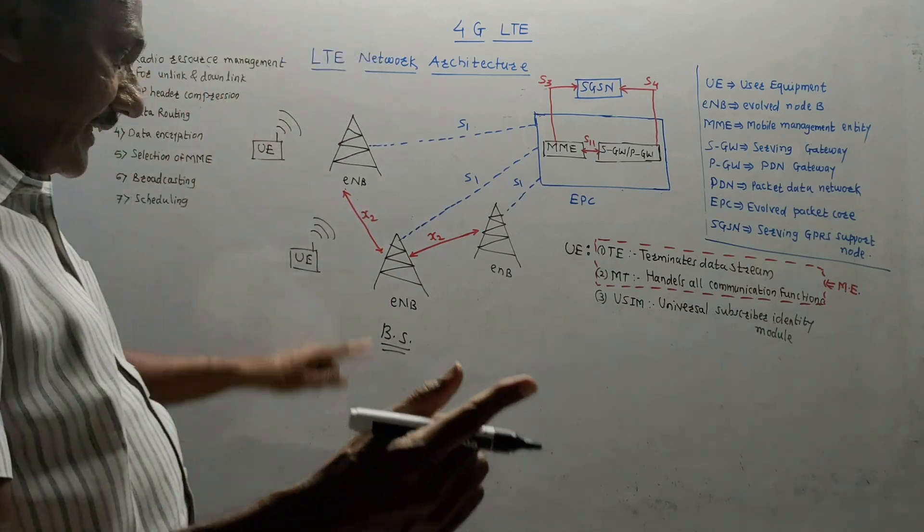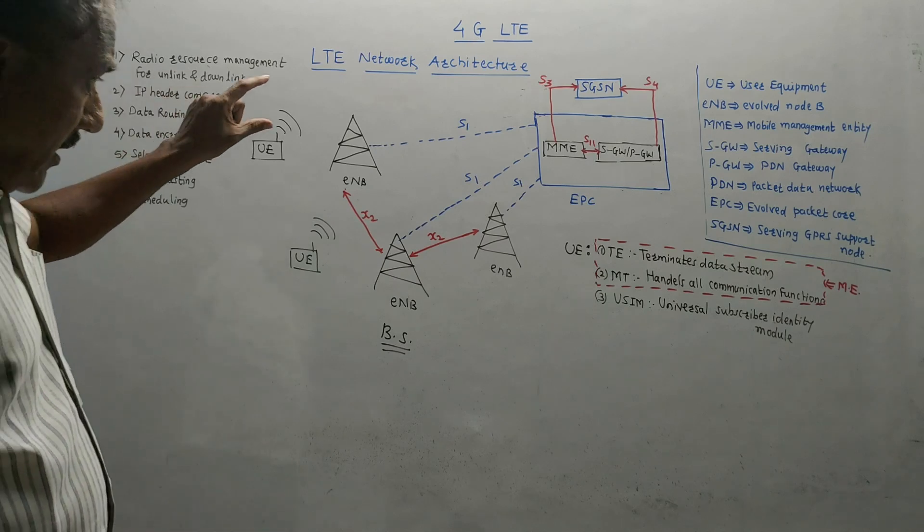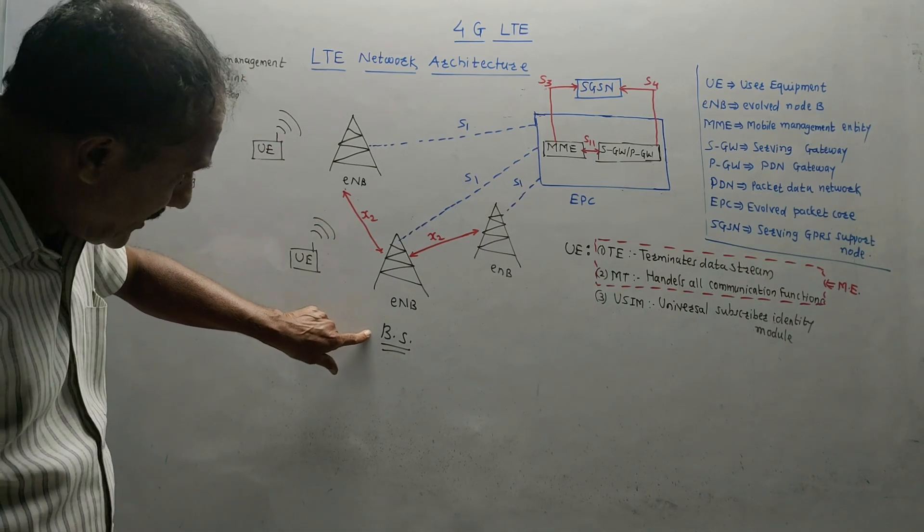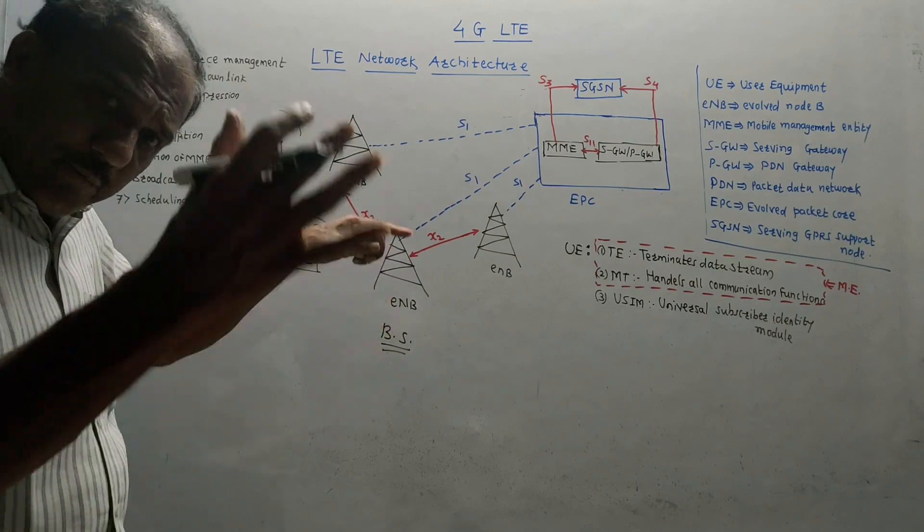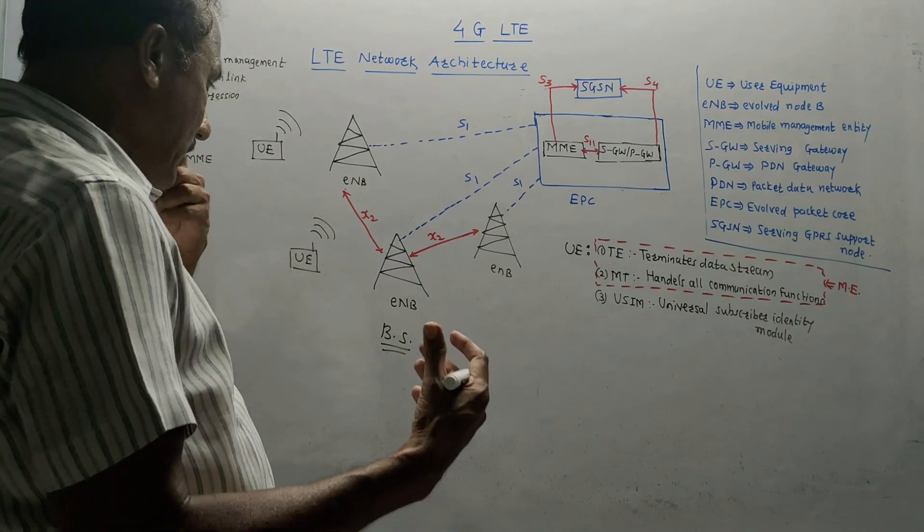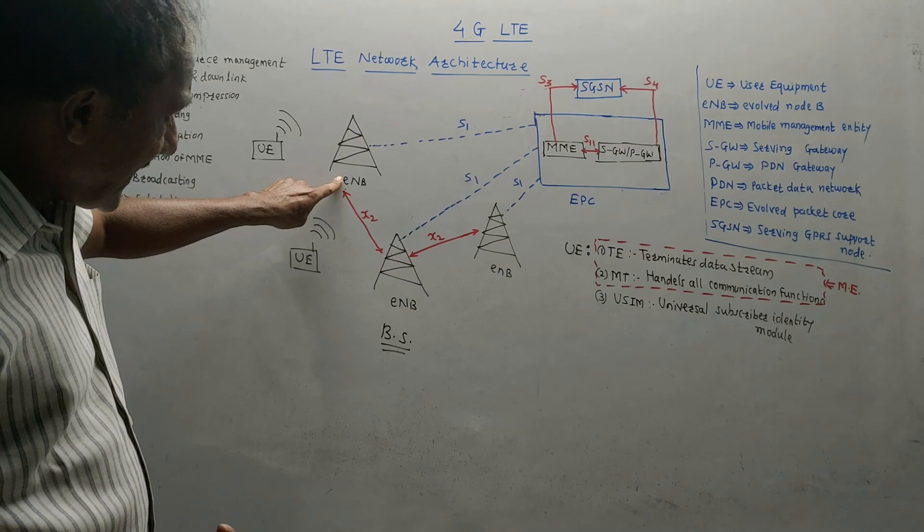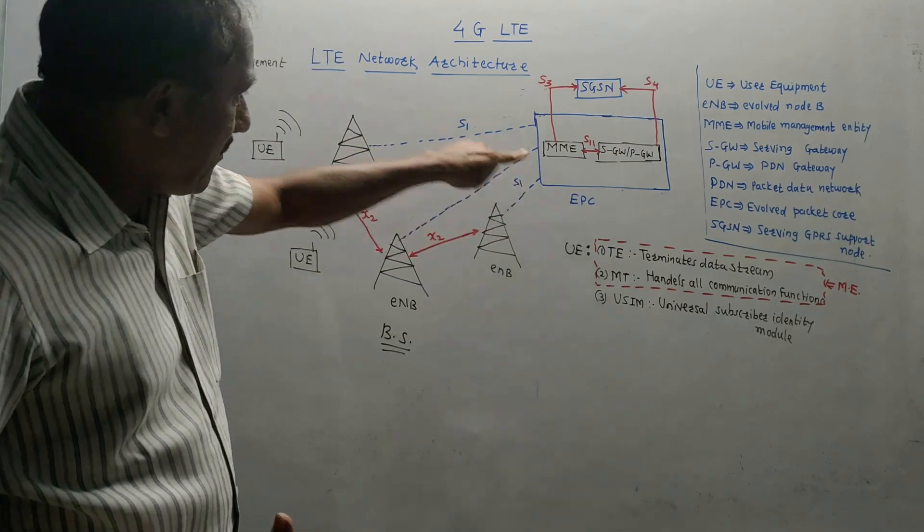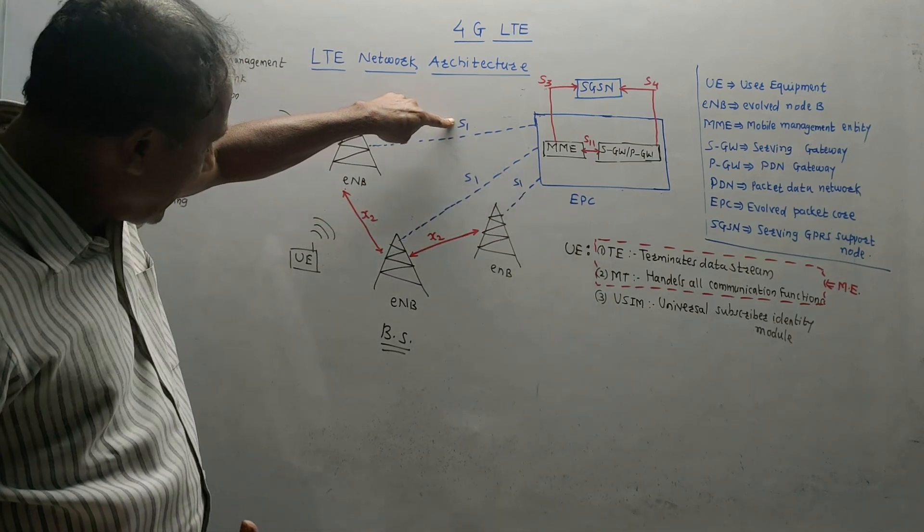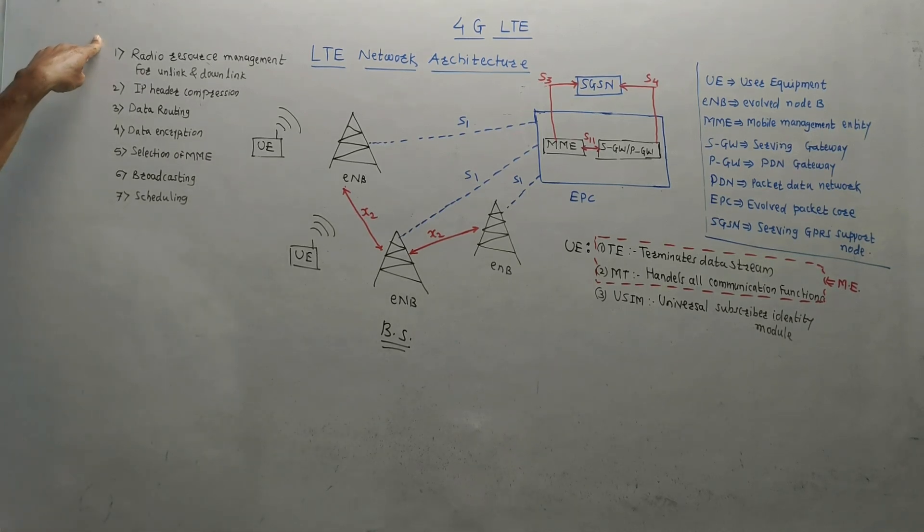In 4G LTE, one mobile at one time will be connected to only one base station. That is the characteristic of 4G LTE. The base station which is presently in active condition or causing communication with a particular mobile is called a serving base station. This ENB is connected to EPC by using interface S1 and it is connected to other ENB by using another interface, X2.